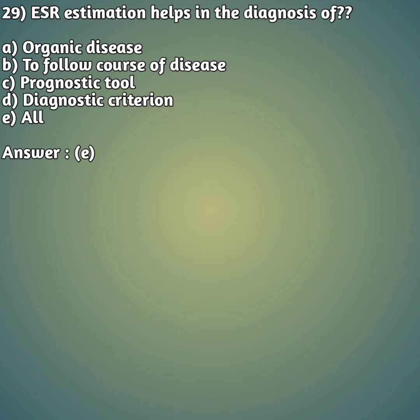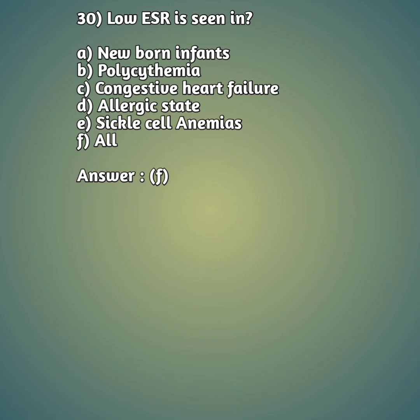Question 29: ESR estimation helps in the diagnosis of what? Options: option A: organic disease, option B: to follow course of disease, option C: prognostic tool, option D: diagnostic criterion, option E: all. The right answer is option E, all. These are all the criteria for which we use ESR estimation in diagnosis.